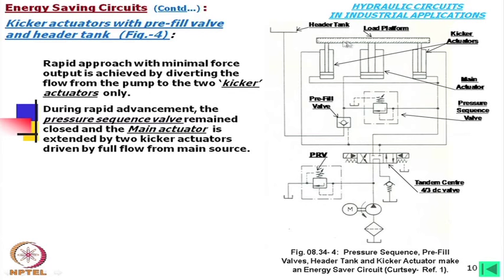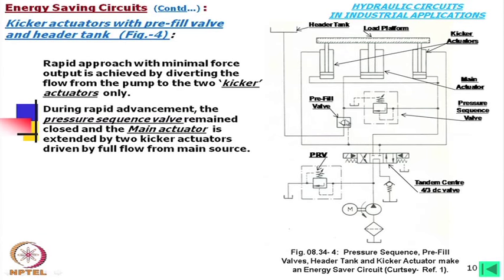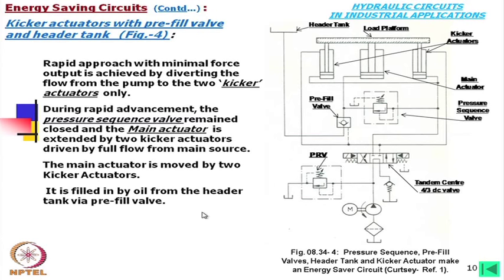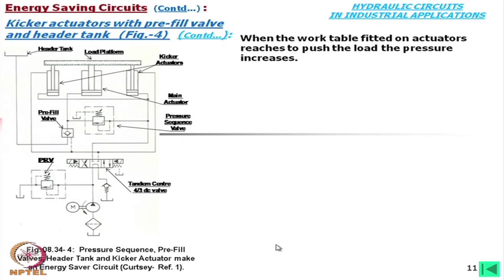As the platform is moving upward, all three are coupled to this load platform. We need to have oil in the main cylinder also — no air should be there. For that, the header tank is there, and from this header tank oil is coming into the main cylinder, simply filling it. The main actuator is moved by the two kicker actuators in this situation, and it is filled by oil from the header tank via the pre-fill valve.